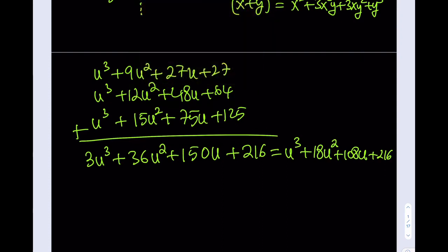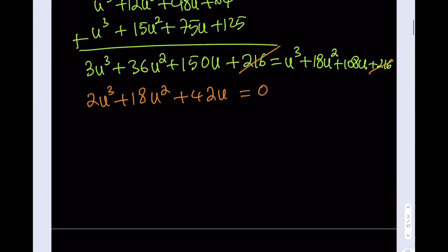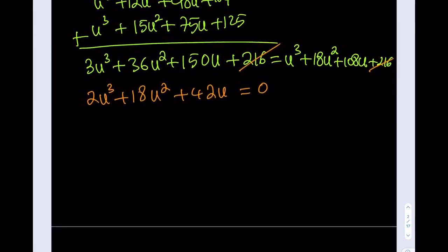Okay, let's continue with this one. So 216 is going to cancel out. Then if you put everything on the left hand side, you're going to be getting 2u³ + 18u². If I subtract 18u², 108 subtracted from 150u, you're going to be getting 42u. And obviously, there's no constant term. So this is equal to 0.